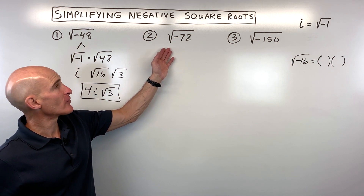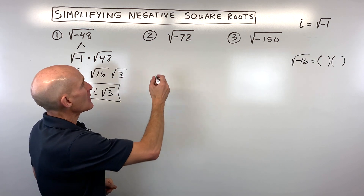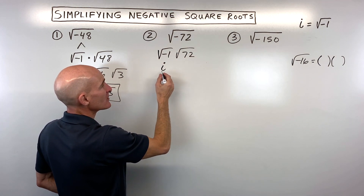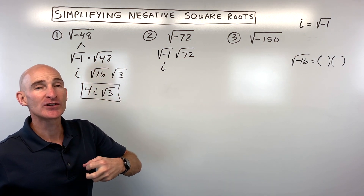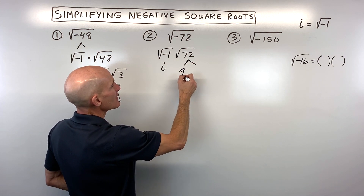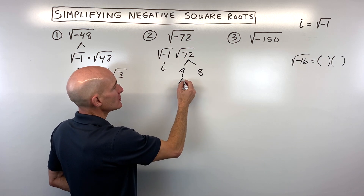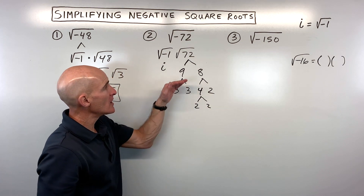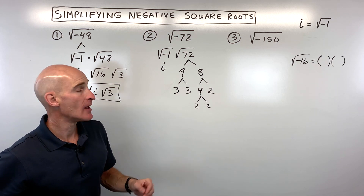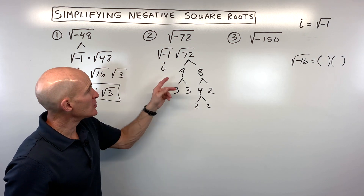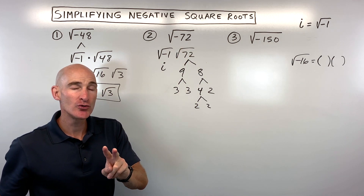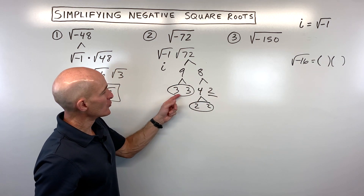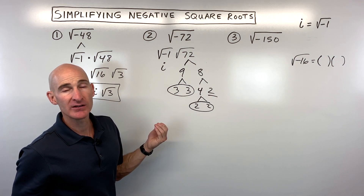Now let's look at number 2. I'm going to show you a different way of approaching these. For the square root of negative 72, again, we can say this is the square root of negative 1 times the square root of positive 72. The square root of negative 1 we represent with the letter i for imaginary. But this time, instead of dividing out perfect squares, let's do a prime factorization tree to see what 72 is made up of. 9 times 8 is 72; 3 times 3 is 9; 4 times 2 is 8; and 4 is 2 times 2. You break it down until you get to just the prime numbers — the numbers that can only be divided by 1 and themselves. Then when taking the square root, you look for a pair of the same number and group those together. For each group, you pull one out in front of the square root sign.